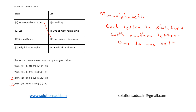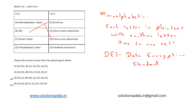DES stands for Data Encryption Standard. It is a symmetric key algorithm and it uses a round key in encryption. From this, we can see that B is mapped to one, so option two is also eliminated, and option one will be the right choice.